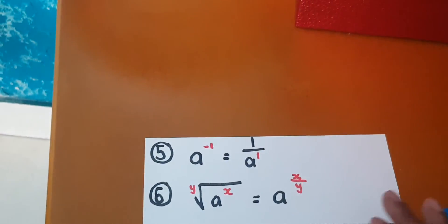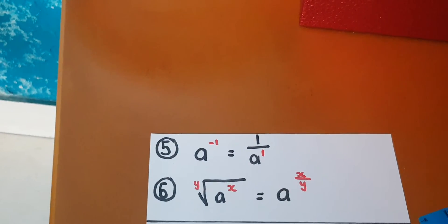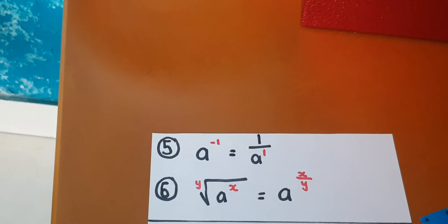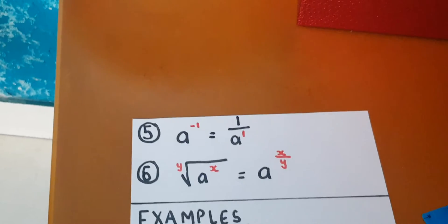So just to recap, there are six rules — four here and another two here. Now we're going to go through each law on its own with an example.